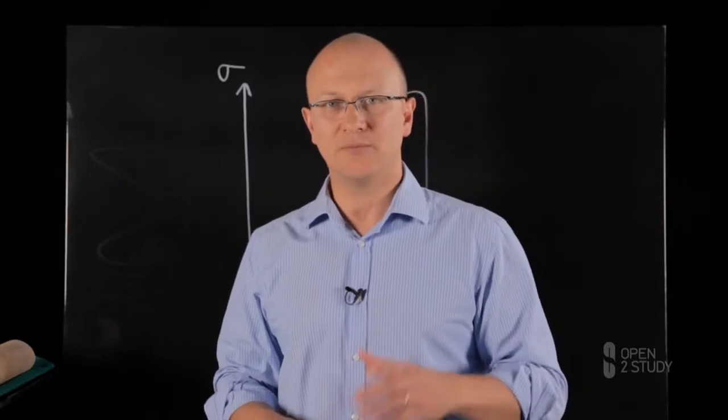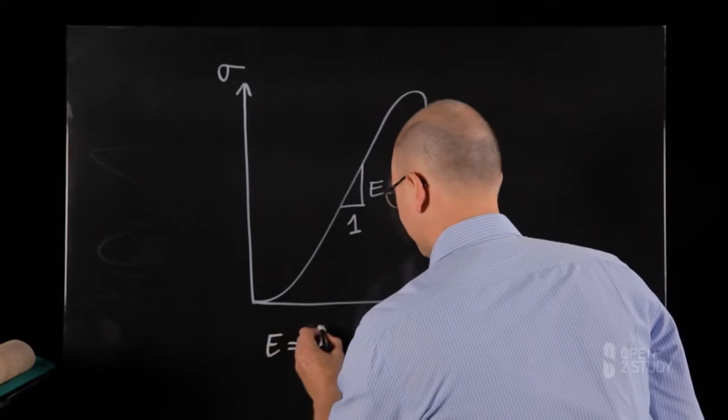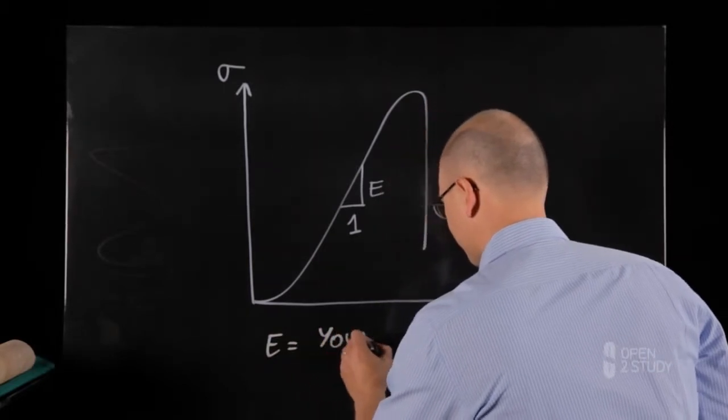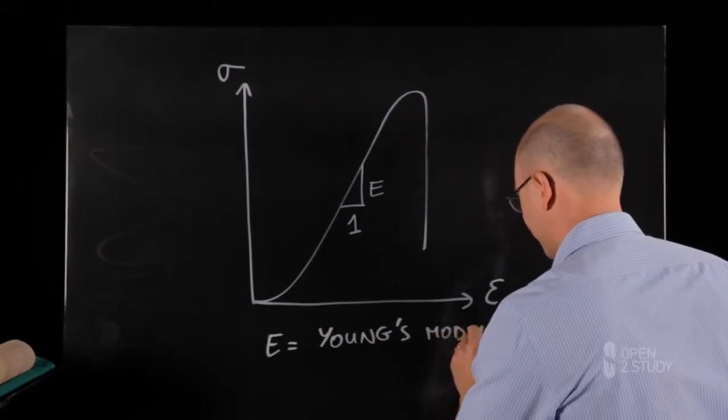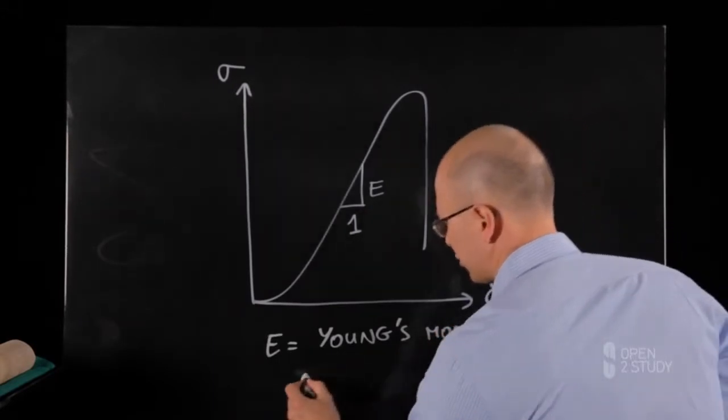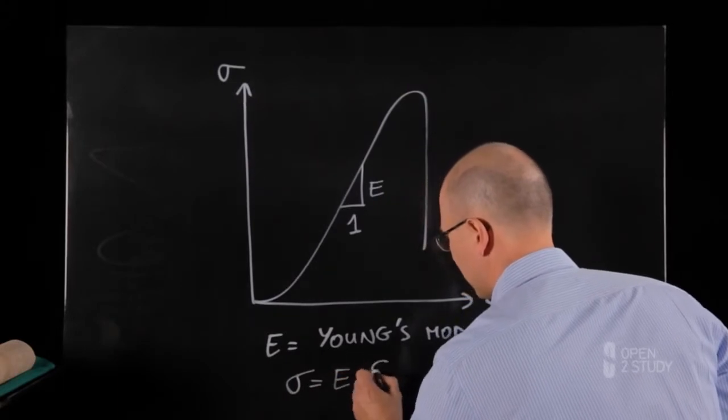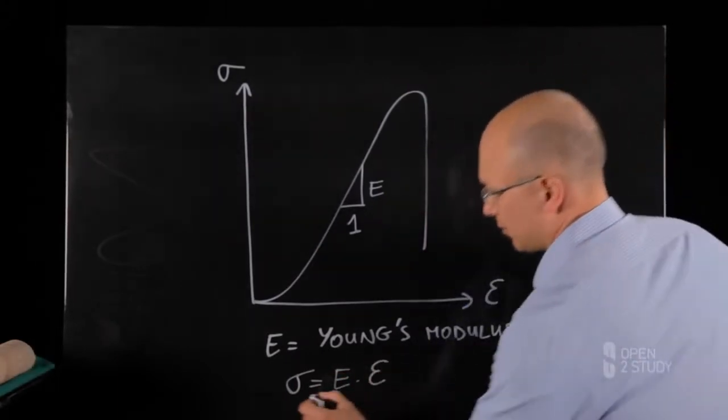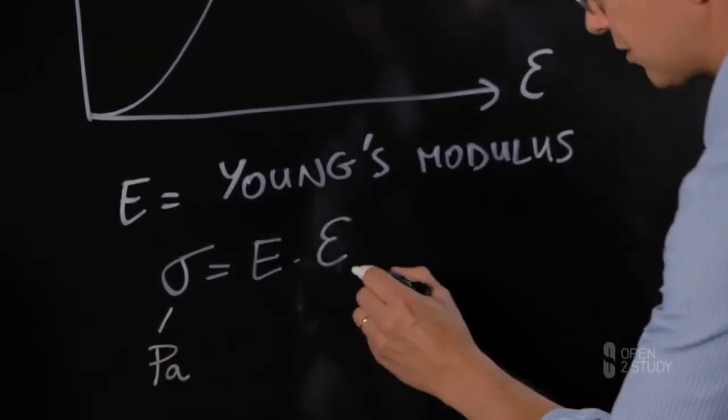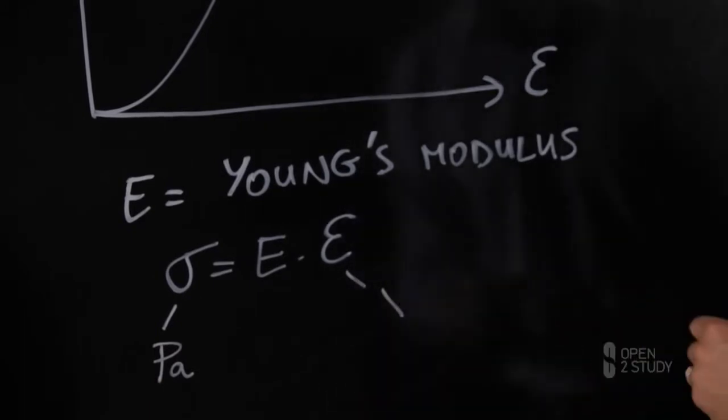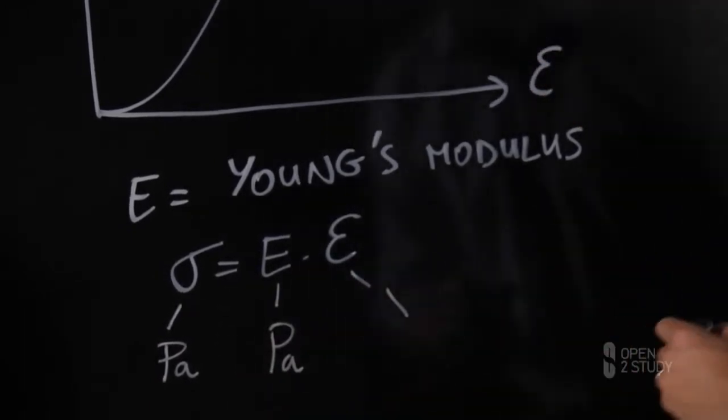So let me explain this E a bit more to you. E is called the Young's modulus. And we have a relationship between stress, sigma, equals to E times epsilon. We said sigma has a unit of Pascal. We said strain has no unit, hence E has unit of Pascal as well.